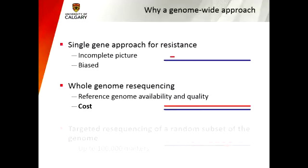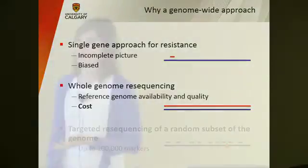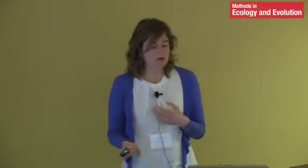Why don't we stick to this single-gene approach? First, we know the picture it gives is incomplete — those mutations don't describe the full resistant phenotype we observe, so we know there are other loci involved in resistance. Another problem is that this approach is very biased: we only look at genes we a priori think are involved in drug resistance, meaning we might miss other interesting regions. Another approach would be to re-sequence the whole genome, but as James Wasmuth will discuss shortly, there are still issues with reference genome quality and availability, and another major issue is cost.